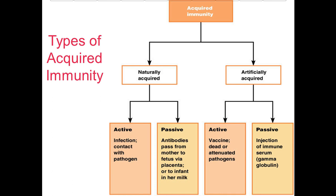Artificially acquired immunity is also divided into active and passive. Artificially active immunity involves a vaccine of dead or attenuated pathogens, while artificially acquired passive immunity involves the injection of immune serum or immunoglobulins.